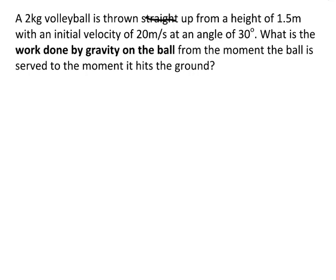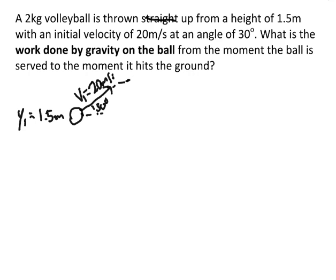This volleyball is thrown up from a height of 1.5 meters with a velocity of 20 meters per second at an angle of 30 degrees. So y₁ is 1.5 meters; here's the ball, with the initial velocity v₁ equal to 20 meters per second, and the ball is going to go up and come down and hit the ground, where y₂ will be 0.